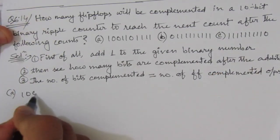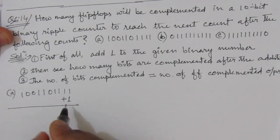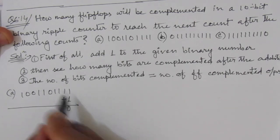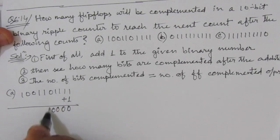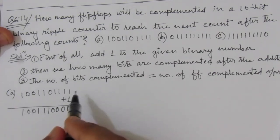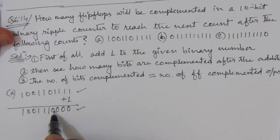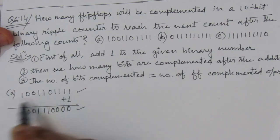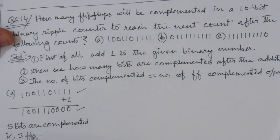For part (a) we have 1001101111. We add one to this number: one plus one is two, so zero here and one carry; one plus one is zero again with carry; then zeros; then zero plus one is one, and the rest remain the same, giving 1001110000. Comparing the bits, one, two, three, four, five bits are complemented. Therefore, five flip flops are complemented.